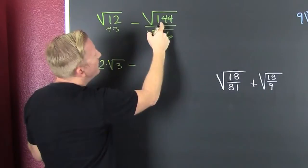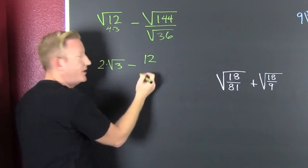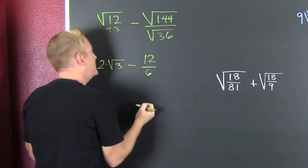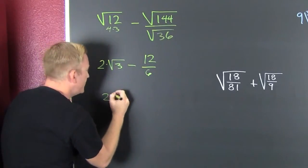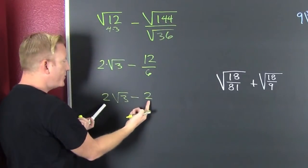Minus the square root of 144, that's 12 because 12 times 12 is 144, and then that's divided by 6. But I'm not done, that's 2√3 - 2.